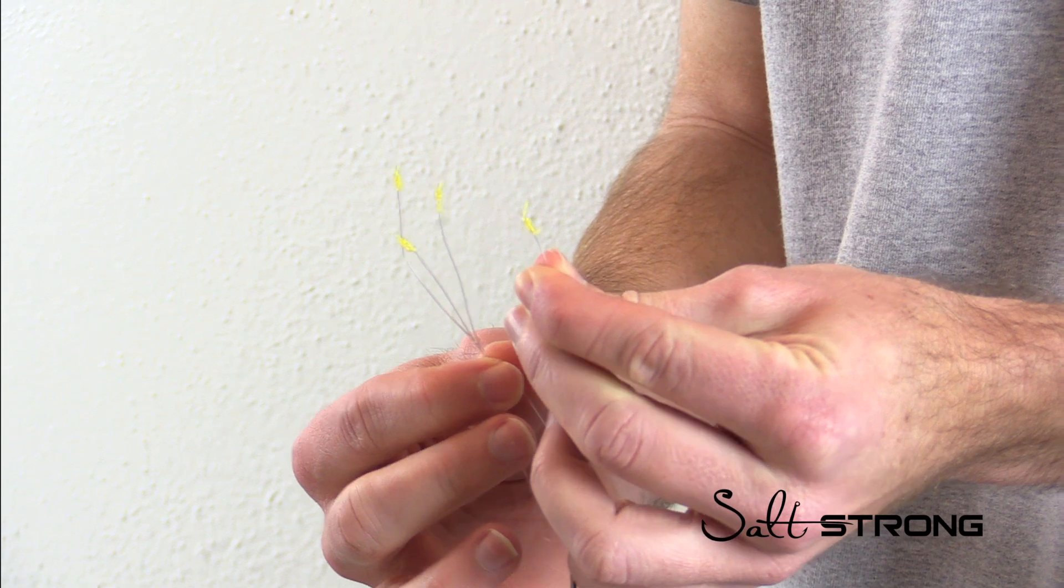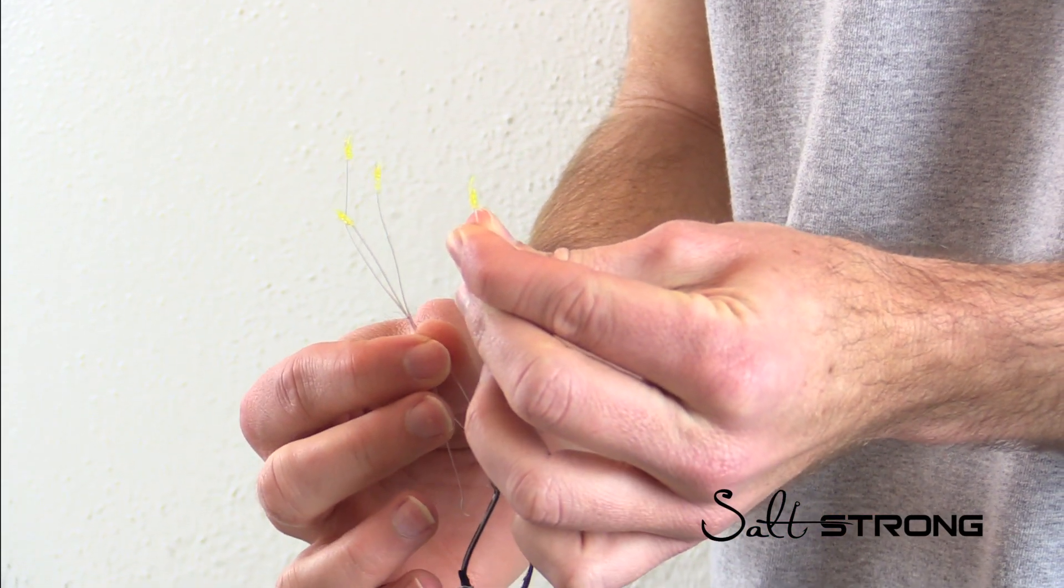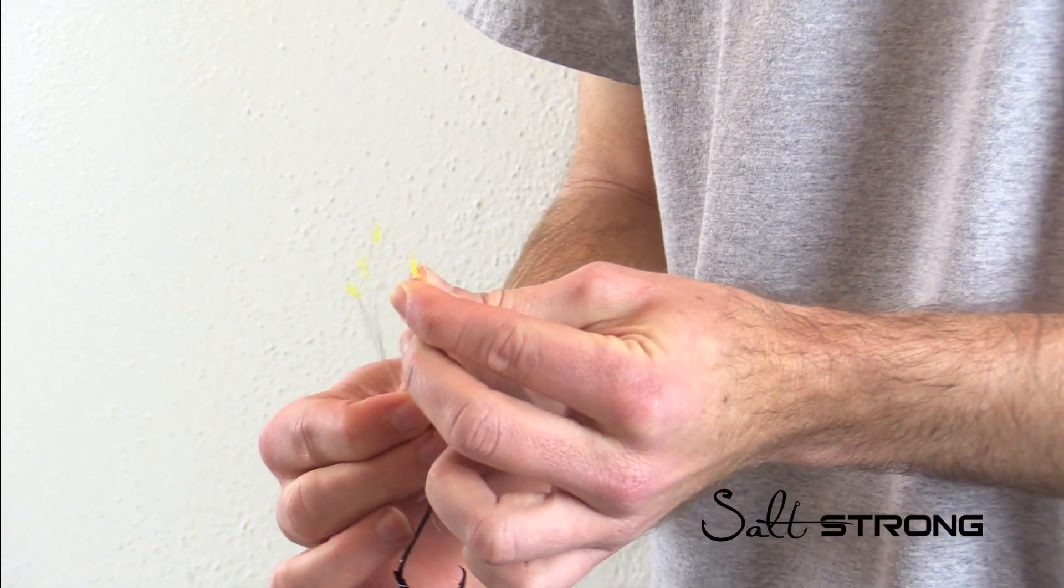But either way, that's 18 pound breaking strength on what was just a 10 pound braid. So obviously a great knot - it's way above the actual breaking strength.